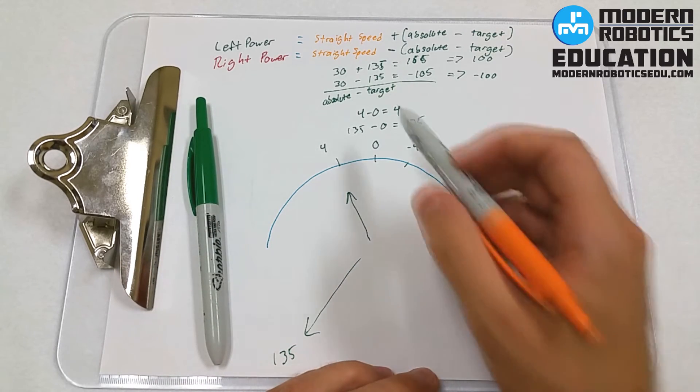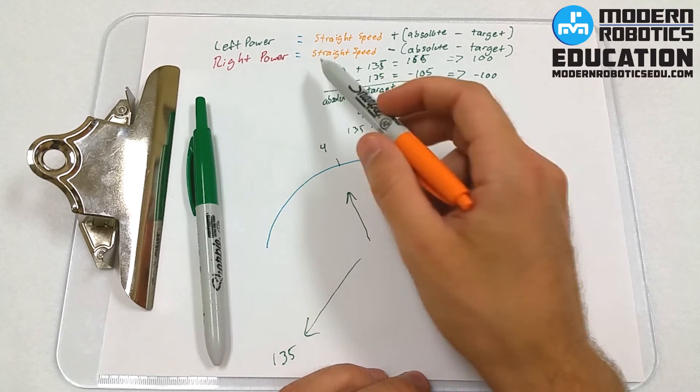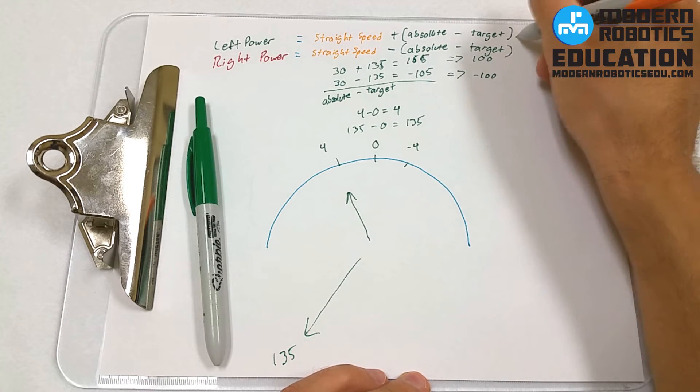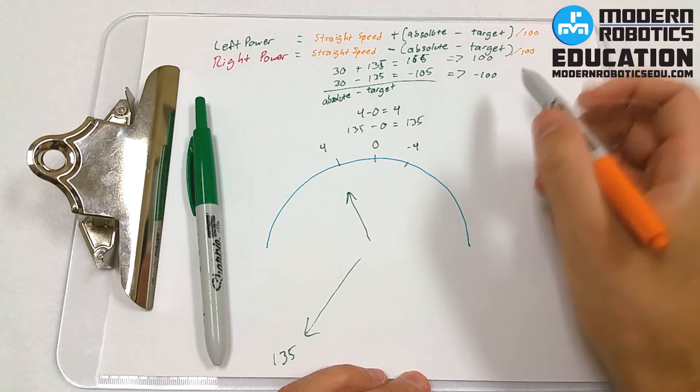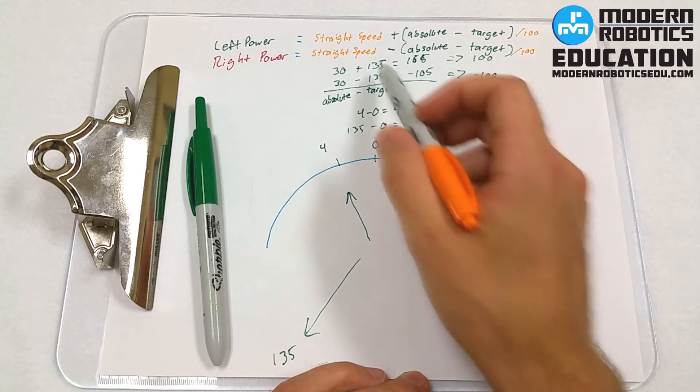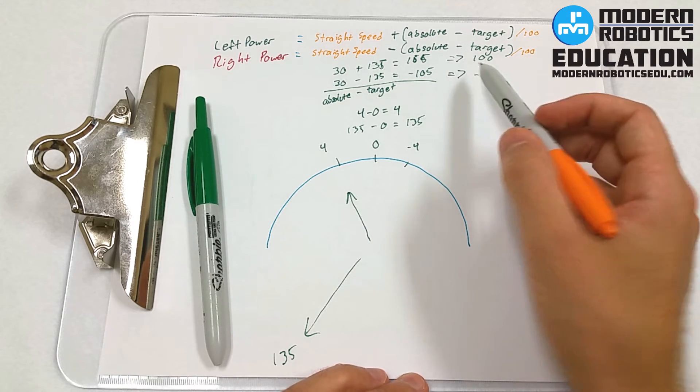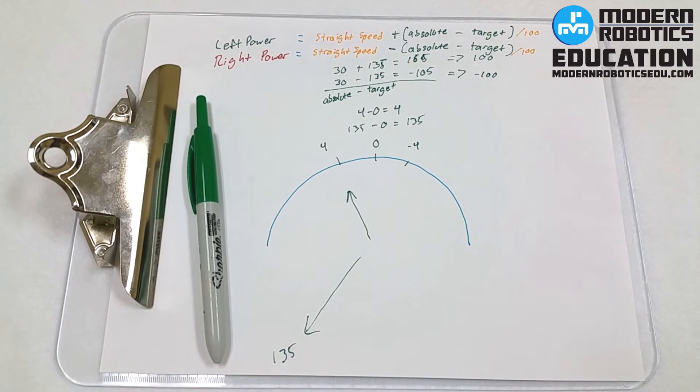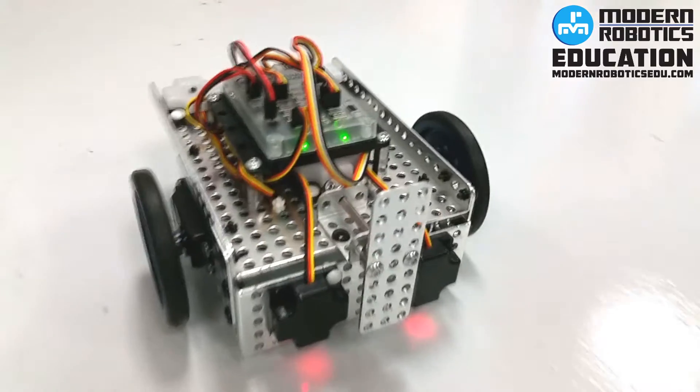The way we're going to fix this with Android Studio, since Android Studio uses a power between negative 1 and 1, is we're going to take this value up here and we'll divide that by 100. Divide this by 100. That way it's in the same scale as this guy is. And then down here, instead of clipping it off between negative 100 and 100, we'll clip it off between negative 1 and 1. Continue on to see the video that matches your programming language, so that you can make your robot drive straight using the Modern Robotics Integrating Gyro.